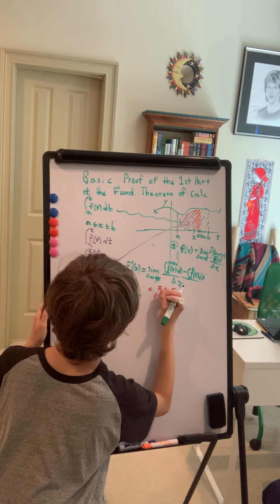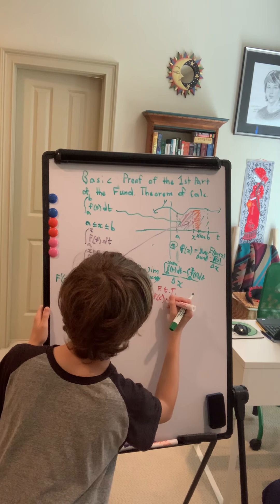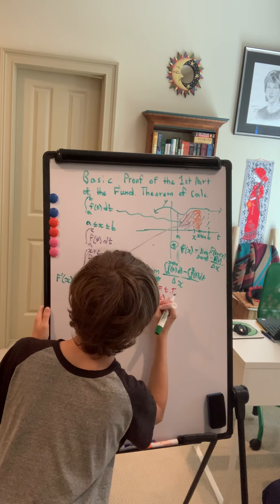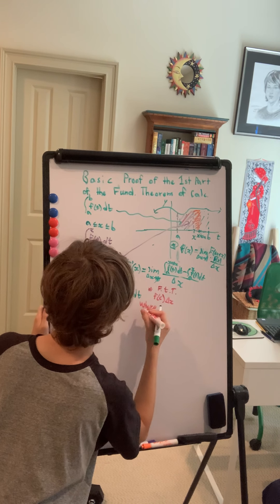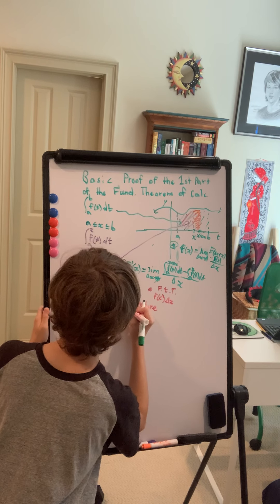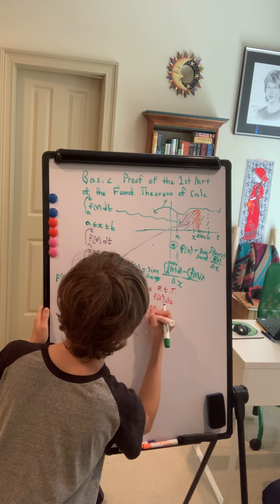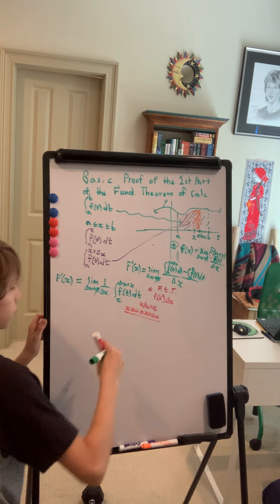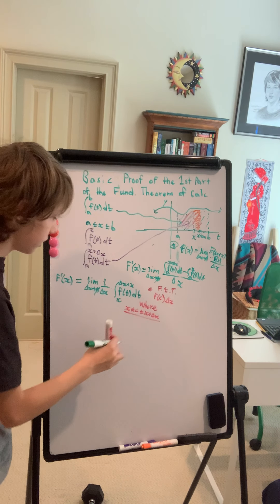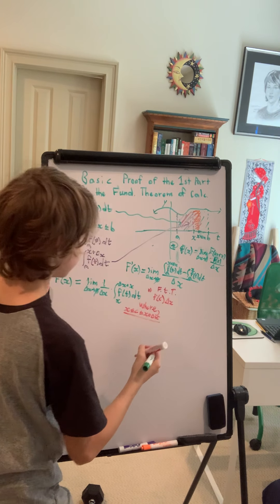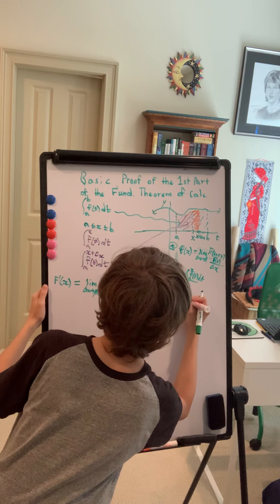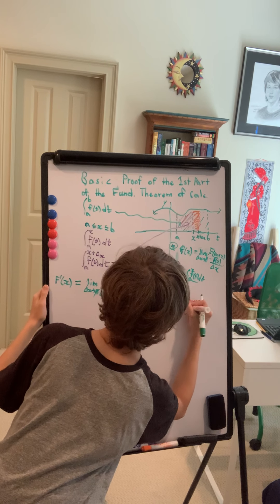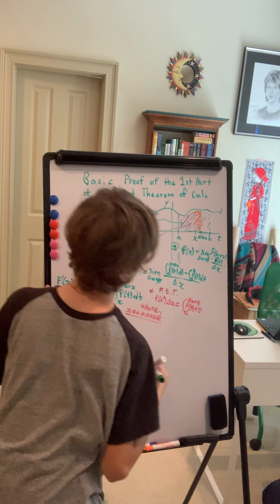And that says that some f of c, where c, I'll write that out in a second, times delta x, where c is in between x and x plus delta x. Okay okay that's crucial. So c is in between x and x plus delta x. This is equal to the integral from x to x plus delta x of f of t dt. Okay.